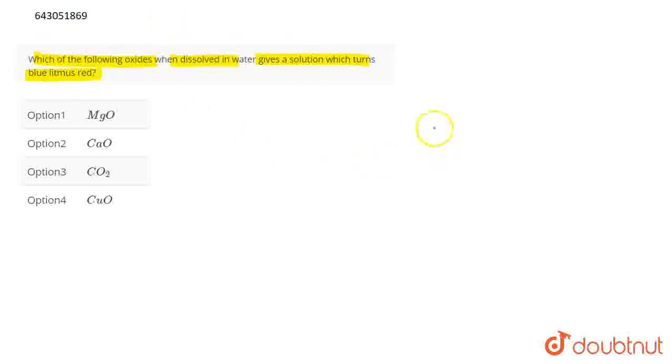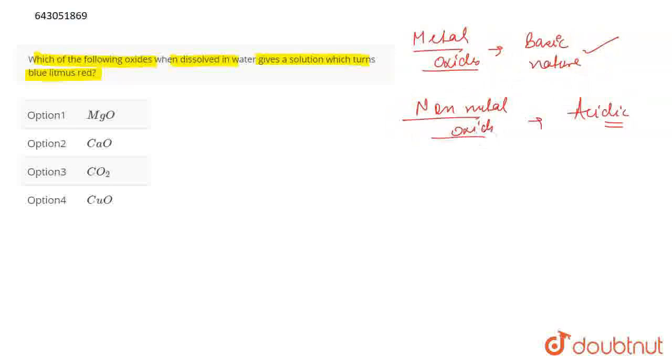A very simple approach to this question is that metal oxides are actually basic in nature, and non-metal oxides are acidic in nature. When metal oxides dissolve in water, they lead to the formation of a base. That is why they are basic in nature. Whereas, non-metallic oxides when dissolved in water lead to the formation of an acid and that is why they are acidic in nature.